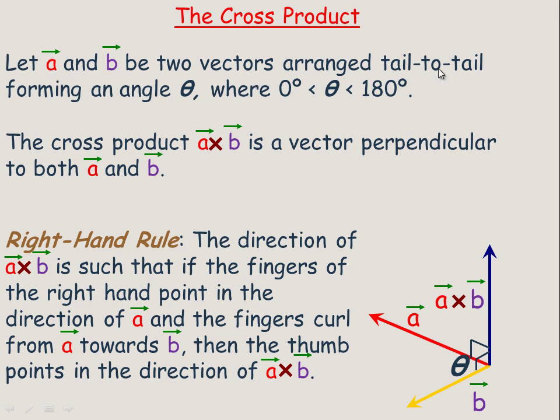Let a and b be two vectors arranged tail to tail, forming an angle theta. Theta is the angle between them, and theta could be any angle between 0 and 180 degrees. The cross product yields a vector perpendicular to both a and b. So this blue vector here is perpendicular to both a and b. When you take the cross product of a and b, you get a vector perpendicular to the two vectors you started with.